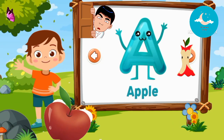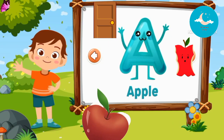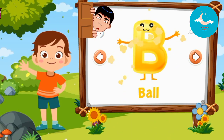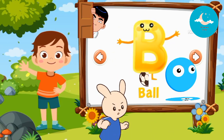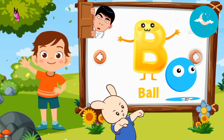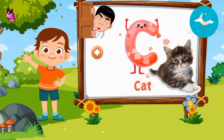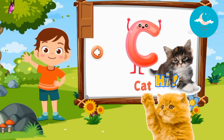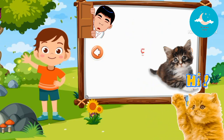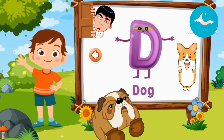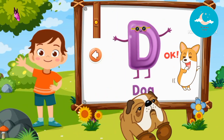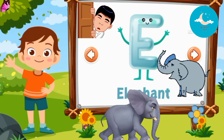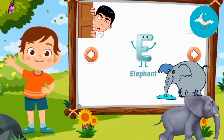A. A is for Apple. B. B is for Ball. C. C is for Cat. D. D is for Dog. E. E is for Elephant.